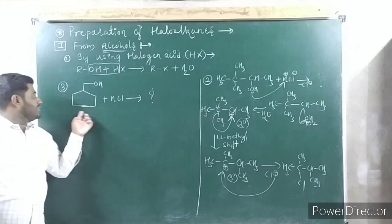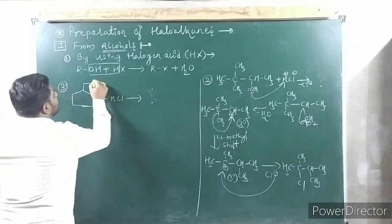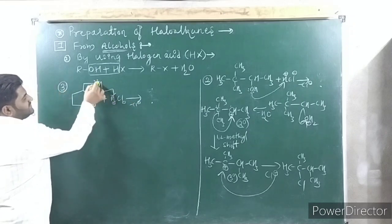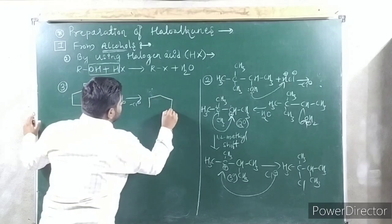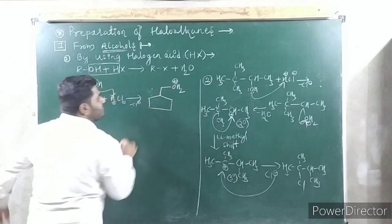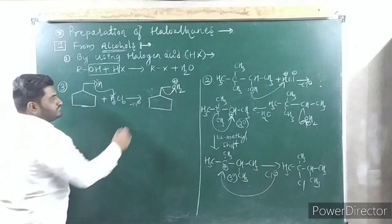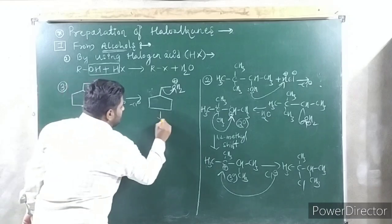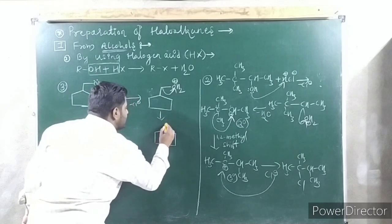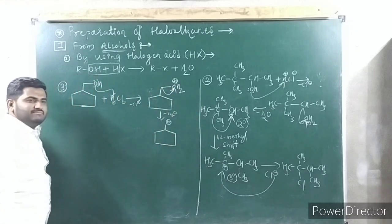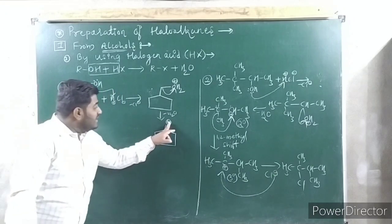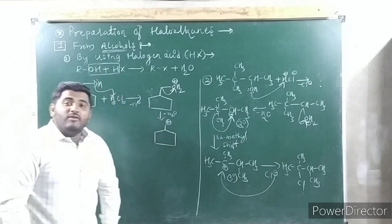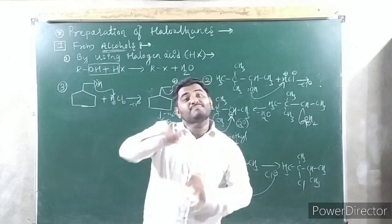One more example: what if a cyclic ring is present? Carefully see — if this cyclopentyl ring is there, same steps apply. The lone pair attacks H⁺, Cl⁻ is eliminated, and you get OH₂⁺. Electrons are taken by oxygen, so this carbon gets a plus charge. But here halogen does not attack directly — because this is a 5-membered ring with ring strain. So what happens? Ring expansion takes place.